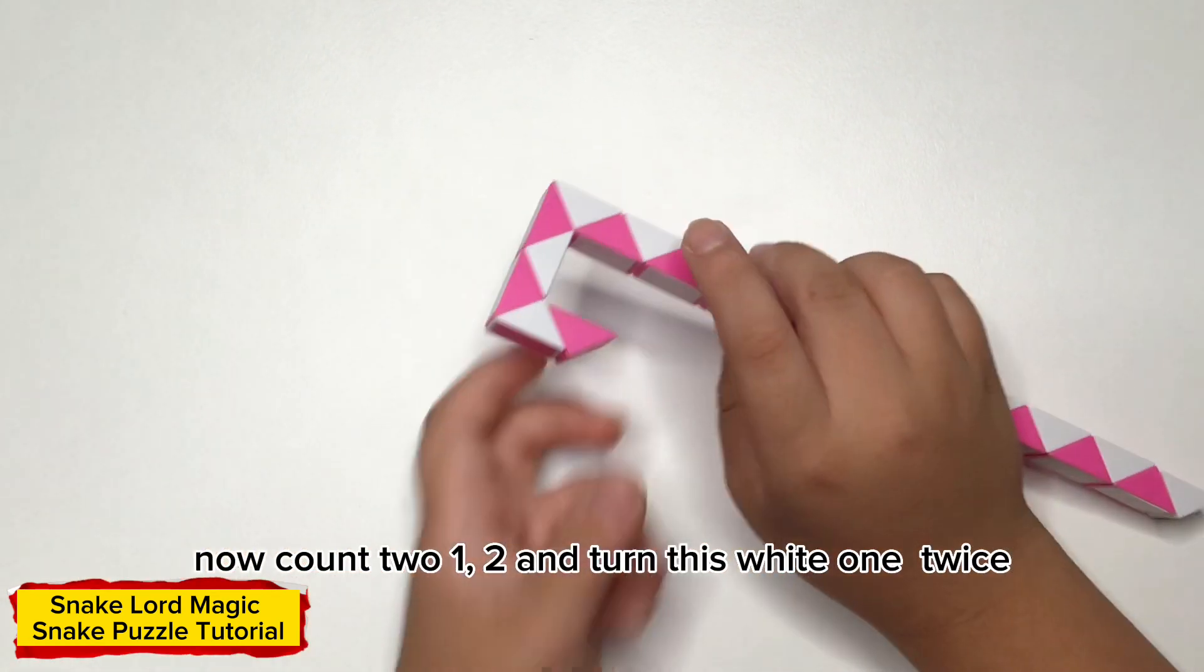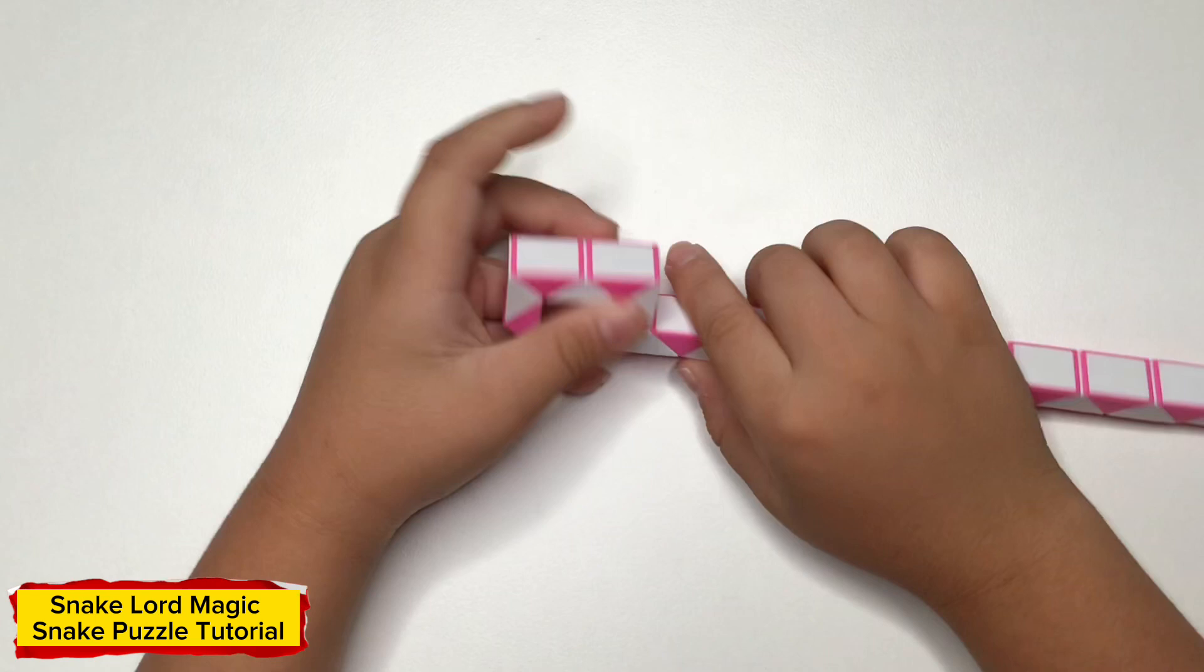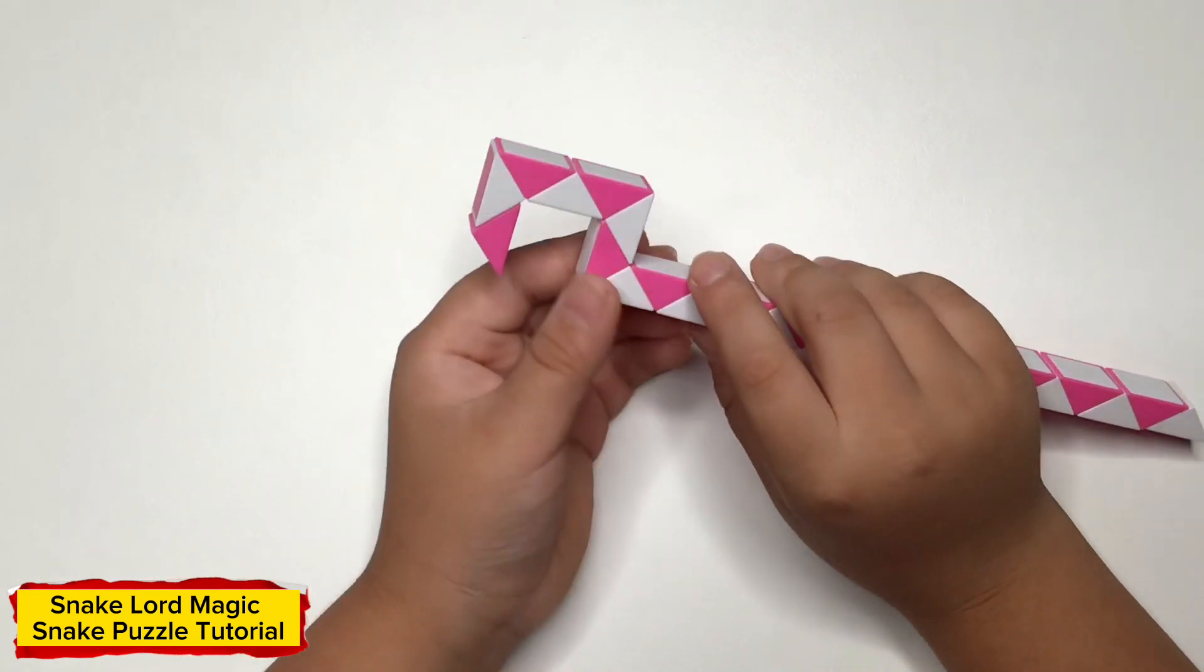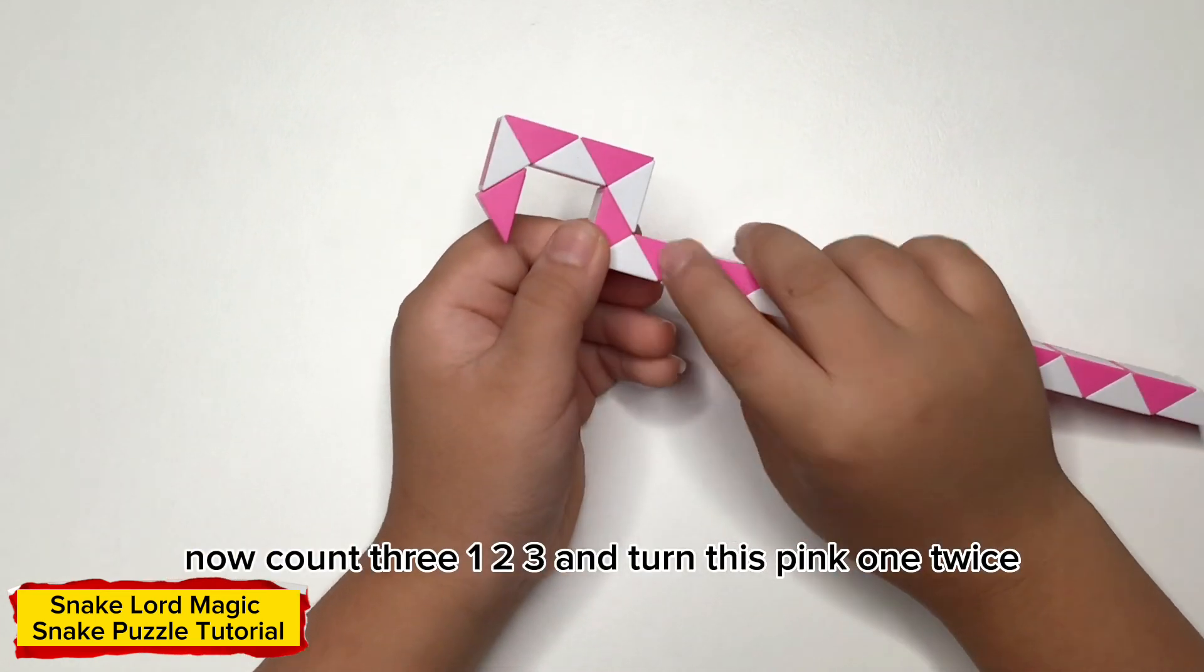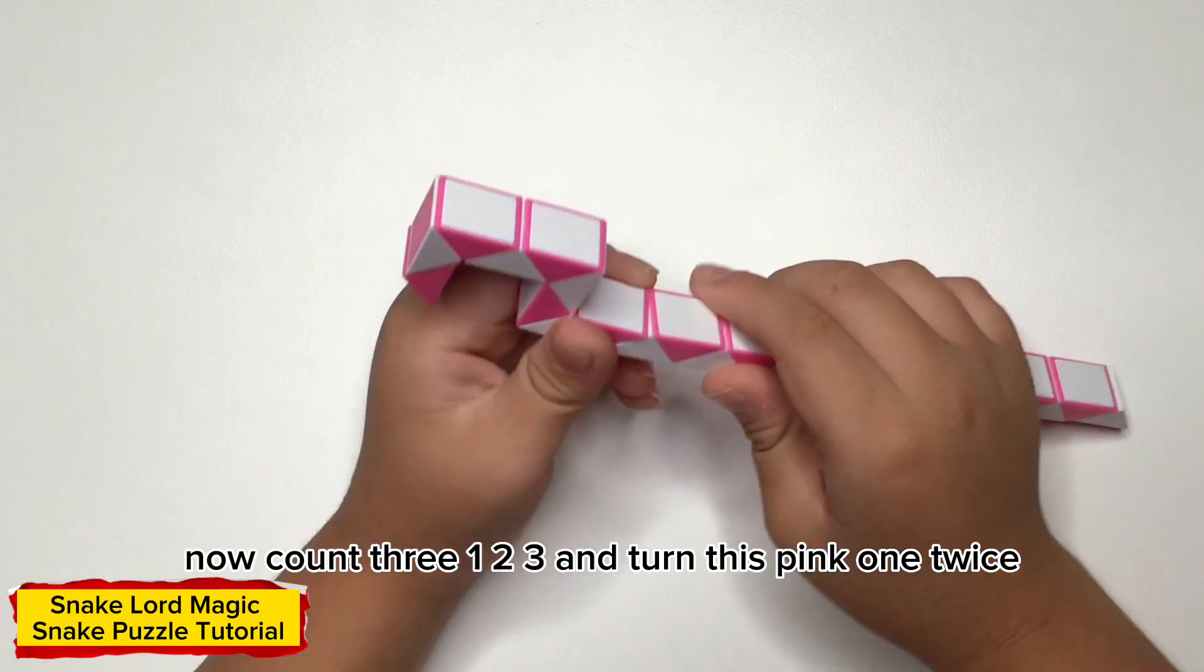Now count 2, 1, 2, and then twist piece 1 twice. Now count 3, 1, 2, 3, and then twist piece 1 twice.